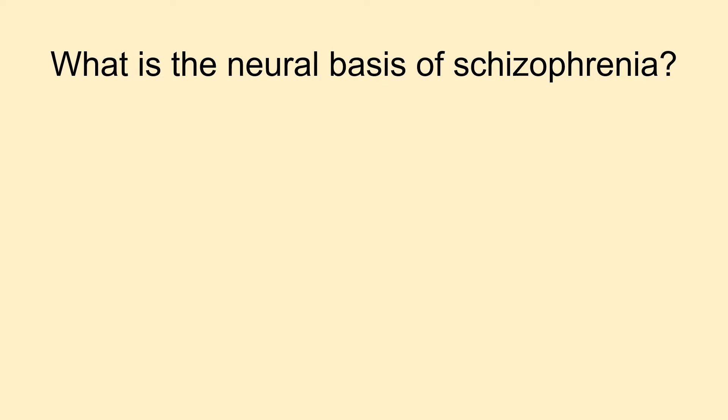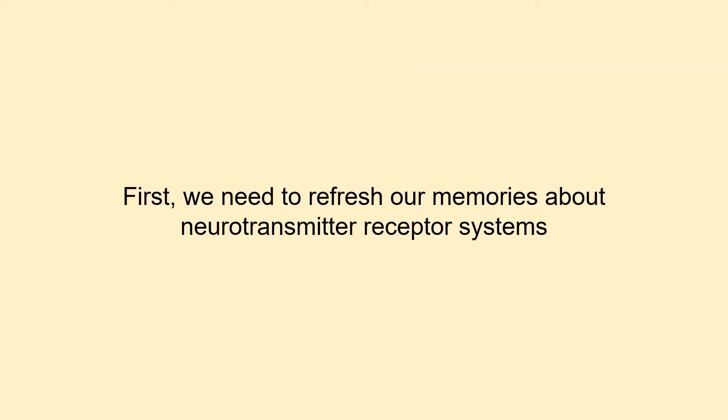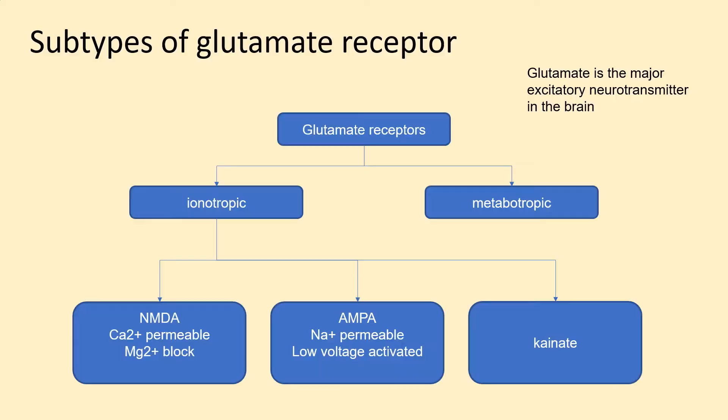So what is the neural basis of schizophrenia? Before we look at that, we need to refresh our memories about some important neurotransmitter receptor systems. First, glutamate receptors. Glutamate is the major excitatory neurotransmitter in the brain; it has metabotropic and ionotropic subtypes. The ionotropic subtypes include NMDA receptors, associated with memory and the famous magnesium block, AMPA receptors, and the much less well-known kainate receptors.